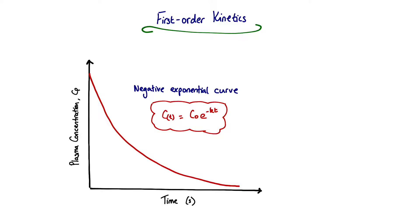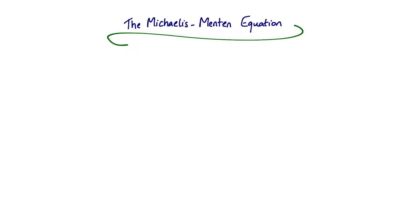It's important in terms of fundamental understanding, and there are a number of rules which drop out of this equation which often make their way onto the exam paper. But for now, the focus is on the shape of this graph and understanding the difference between it and the graph of zero order kinetics, as we look at the Michaelis-Menten equation.